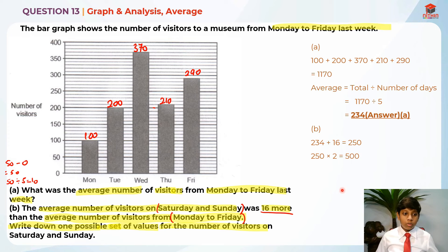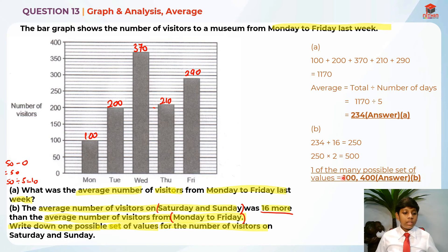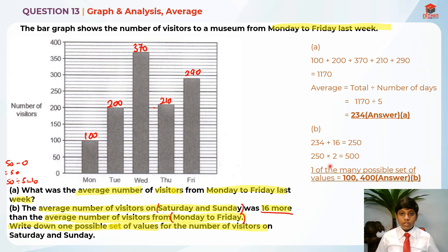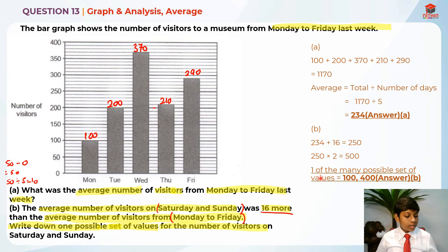So one of the many possible sets of values can be 250 on Saturday and 250 on Sunday, but there are so many answers. Another valid answer is 100 and 400. If you got 250 and 250, it's still correct. If you got 200 and 300, it's still correct. If you do it the other way — 300 and 200 — it's still correct. There are so many answers for Part B because there are many possible sets of values.